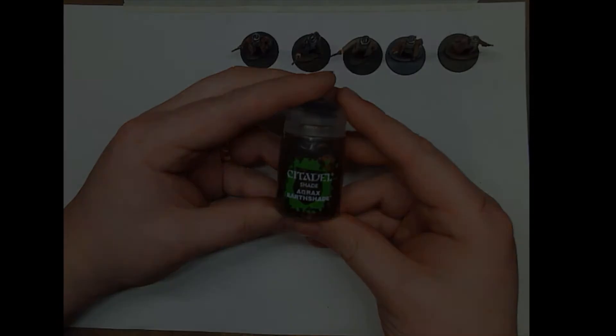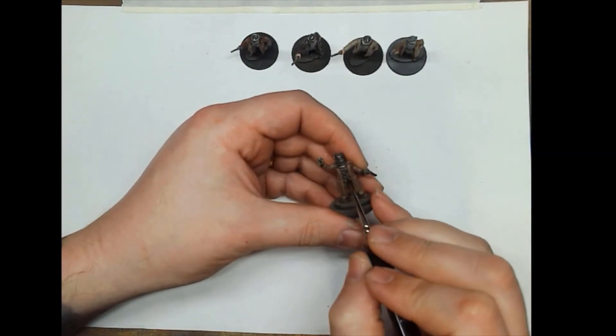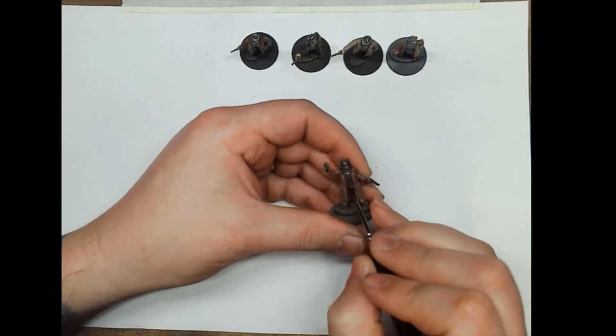We're going to give that a coat of Agrax Earthshade. That way it dirties it down and takes the shine off the metal and makes it look used and worn.